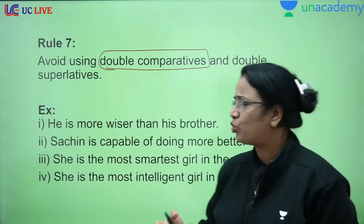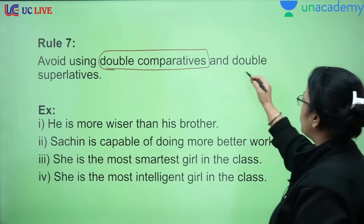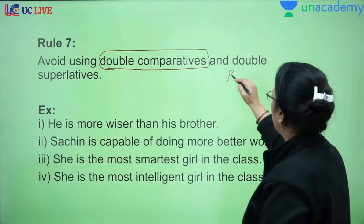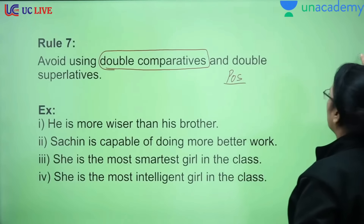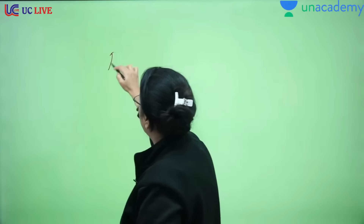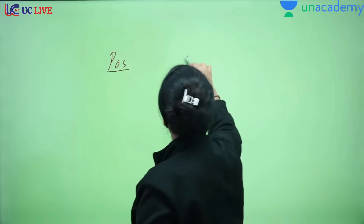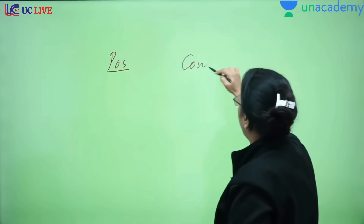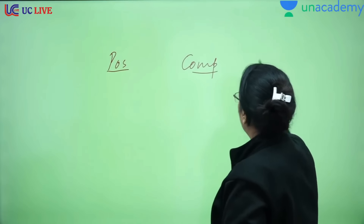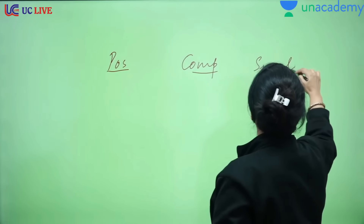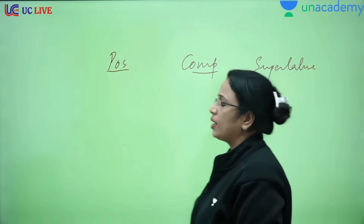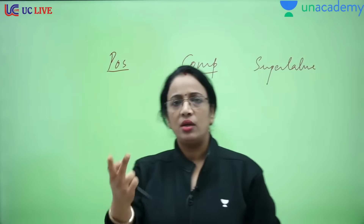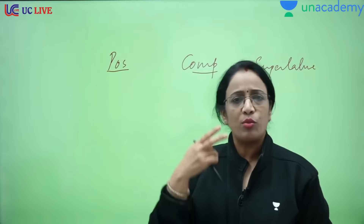Comparative degree — everyone knows, but let me tell you a little. Adjective has three degrees: one is positive degree, one is comparative, and one is superlative. In positive degree there is no comparison. In comparative degree there are two, and superlative, under two.